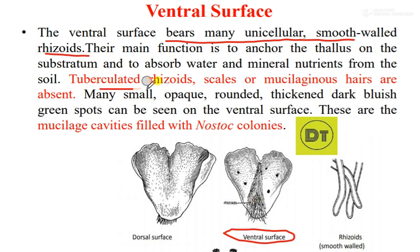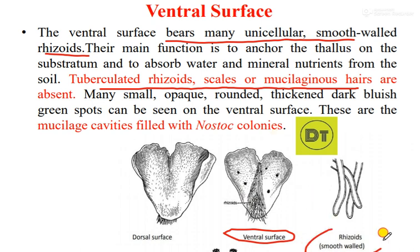There are tuberculated rhizoids as well, but scales and mucilaginous hairs will not be present. In Anthoceros, only smooth-walled rhizoids are found — both smooth-walled and tuberculated rhizoids are discussed, but only smooth-walled ones are present in Anthoceros.